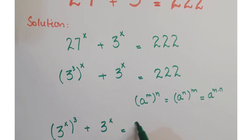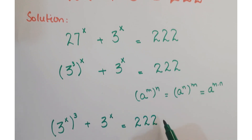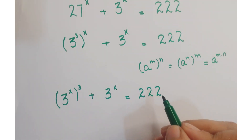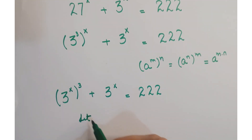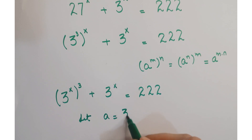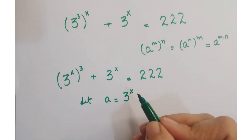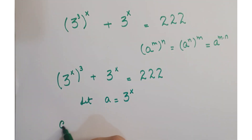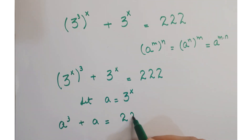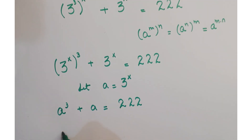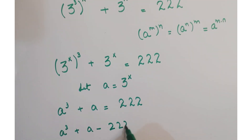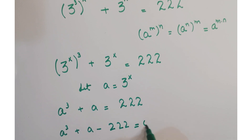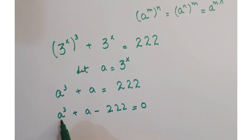So we have 3 to the power x whole cube plus 3 to the power x is equals to 222. Further, let's assume that a is equals to 3 to the power x. Now replacing this with a, you write here a cube plus a is equals to 222.